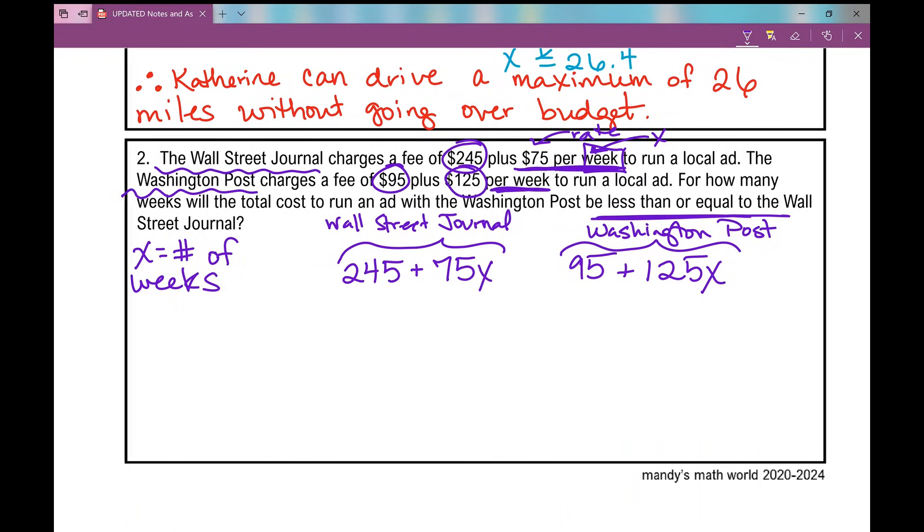The question says, for how many weeks will the total cost to run an ad with the Washington Post be less than or equal to the Wall Street Journal? So this over here needs to be smaller than the Wall Street Journal. So there's what my inequality is going to look like. And now, let's solve.